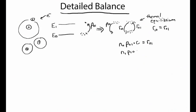Similarly, the rate of de-excitation is the number of atoms in the excited state times the probability of transitioning down times the collision rate. It turns out that to achieve thermal equilibrium, we don't necessarily need the probability of transitioning up to match the probability of transitioning down. If it's harder to transition up, then a large population in the ground state multiplied by a small upward probability can match a smaller excited-state population times a higher de-excitation probability.